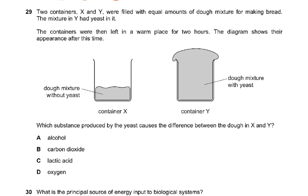Question 29: Two containers X and Y filled with equal amounts of dough for making bread. The mixture in Y had yeast in it. The containers are left in a warm place for two hours. Which substance produced by the yeast causes the difference between the dough in X and Y? Very basic - it's the carbon dioxide. The answer is B because the carbon dioxide makes the dough rise.